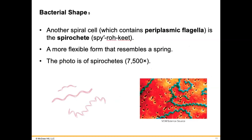Another bacterial shape is the Spirochete. The Spirochete contains what they refer to as a periplasmic flagella, which is found underneath the cytoplasm. So if the flagella — the part of the cell that makes it mobile or motile — is kind of underneath the skin, it ends up gyrating around in a peculiar way. This is a flexible form that resembles a spring, and the photo on the right-hand side shows Spirochetes.